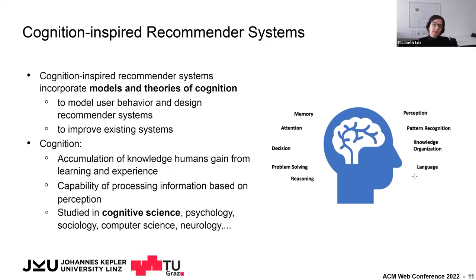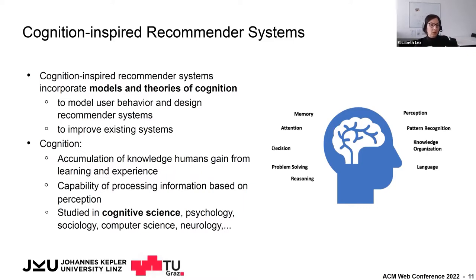What now do cognition-inspired recommender systems do? They incorporate models and theories of cognition to model and understand user behavior. If you understand the principles of human decision-making, you can develop more tailored user models to support human decision-making. Cognition-inspired recommender systems have also been used to address shortcomings of existing algorithms — for example, collaborative filtering has shortcomings when it comes to temporal aspects of user preferences.